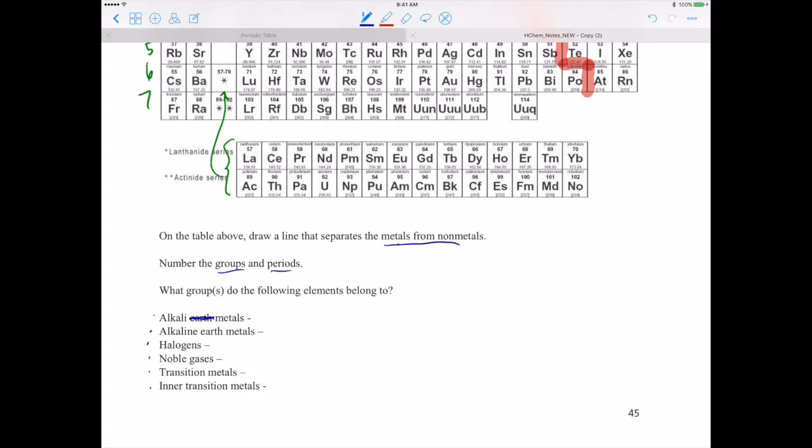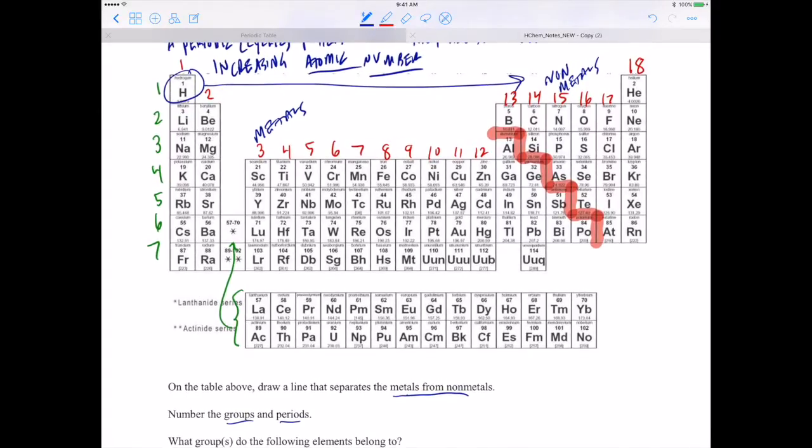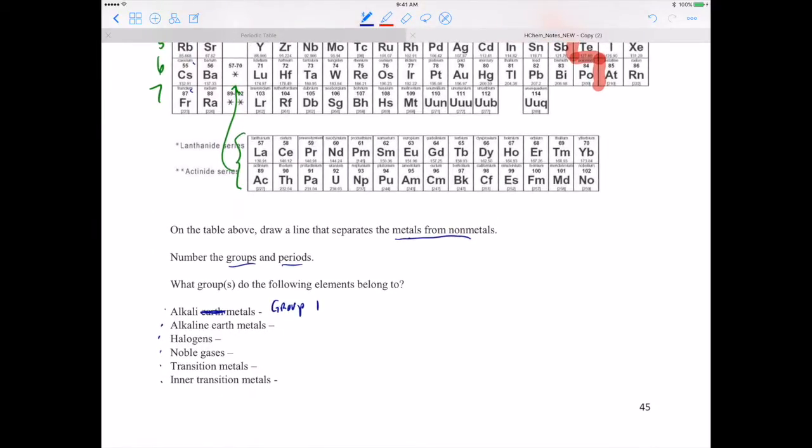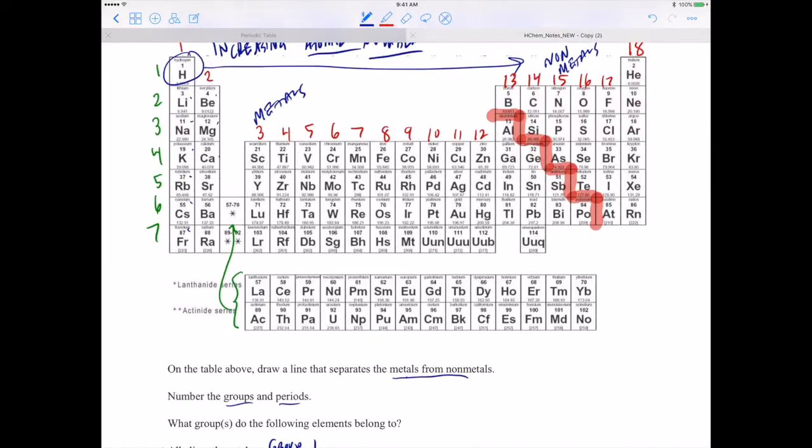Now, what groups do the following elements belong to? Do you remember where the alkali metals belong? If you said group 1, good job. They are the metals in group 1: lithium, sodium, potassium, rubidium, cesium, and francium. And the alkaline earth metals are the elements in group number 2. They would be beryllium, magnesium, calcium, strontium, barium, and radium.